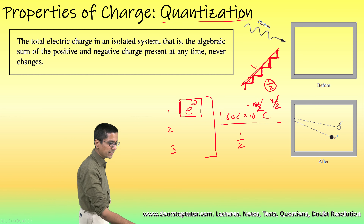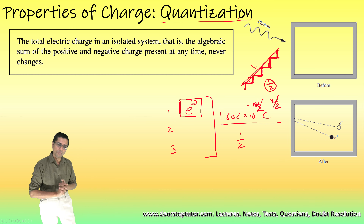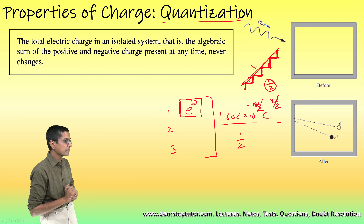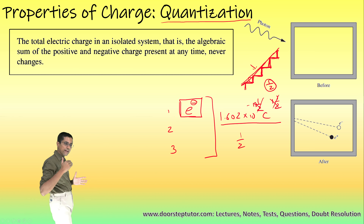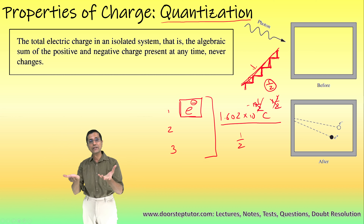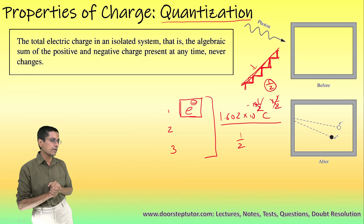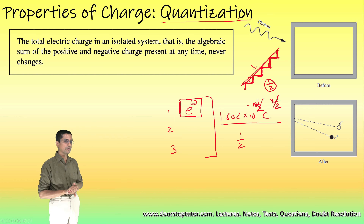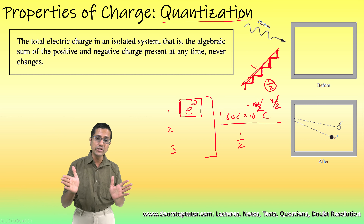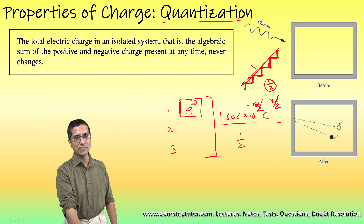With this we complete the lecture. We have covered the definition of charge and its two very important properties. Next class we will deal with Coulomb's law, then move on to Gauss's law, and then to electrodynamics — the study of current. Subscribe to the channel because you can expect many questions on all of these topics, which are very important for your exam.